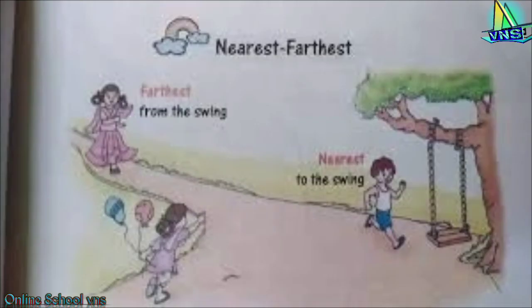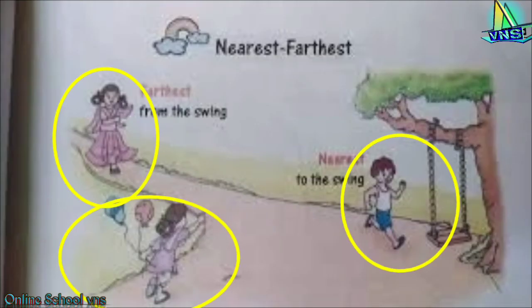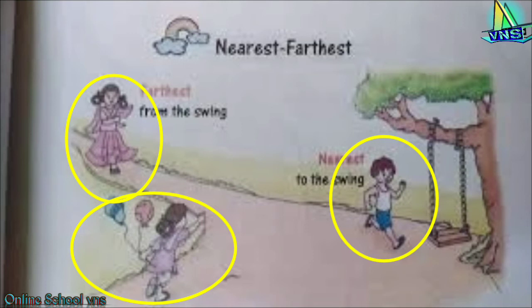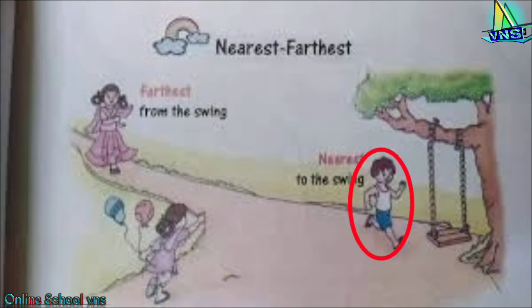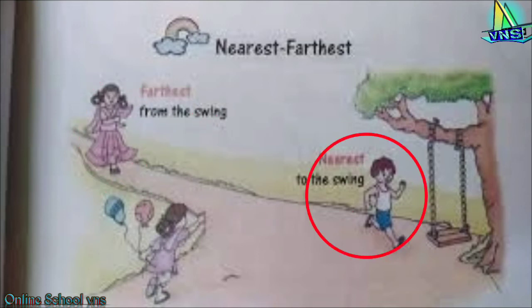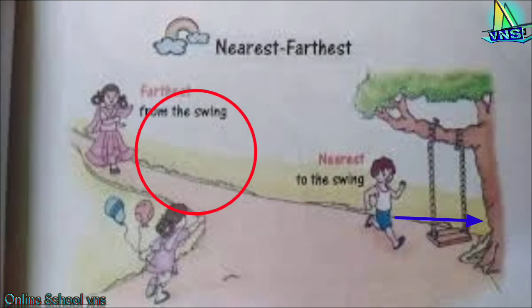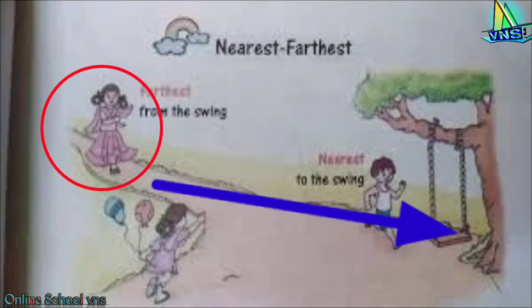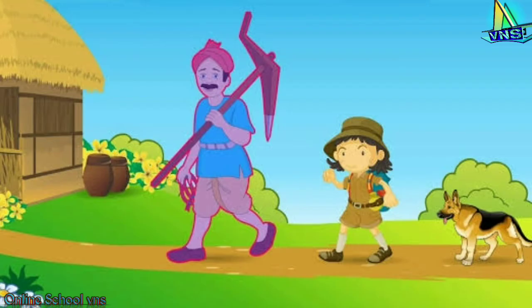In this diagram there are three children playing around a tree. This boy is having less distance from the tree and this girl is having the most distance from the tree, so this boy is the nearest to the tree and the girl is the farthest from the tree.